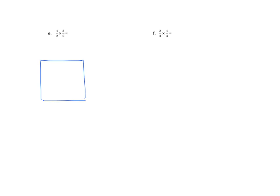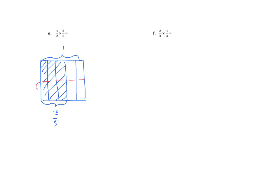A couple more examples using the rectangular model. I have three-fifths as my second factor, so I'll partition this into five equal parts, bracket three of the five parts, and shade them. Now I want one-half of that. We have one-half times three-fifths, a total of ten equal parts, and three are double-shaded with both colors. So we get three-tenths. We should start seeing a pattern here.